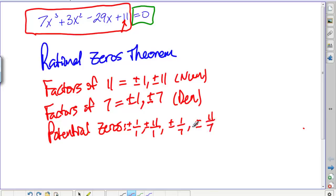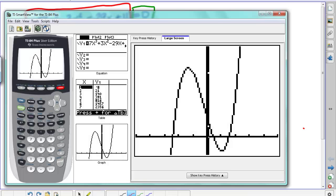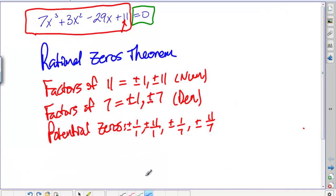Now we know from our graph, these are all possible potential zeros, that those 3 x-intercepts weren't nice even numbers. So from this list, we know that 1 over 1 and 11 over 1 aren't x-intercepts because they don't show up on the graph. So we're left with these four.